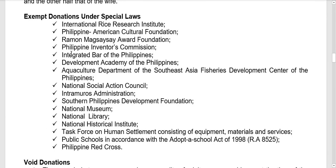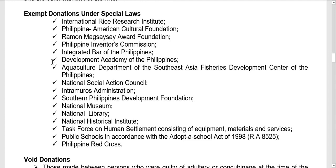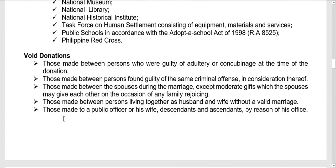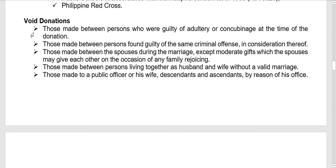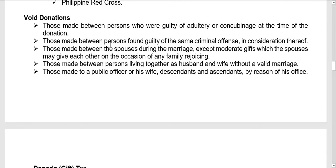Exempt donations under special laws are enumerated in a separate listing. As for void donations: those made between persons guilty of adultery or concubinage at the time of the donation; those made between persons found guilty of the same criminal offense in consideration thereof; and those made between spouses during the marriage, except moderate gifts which spouses may give each other on the occasion of any family rejoicing.